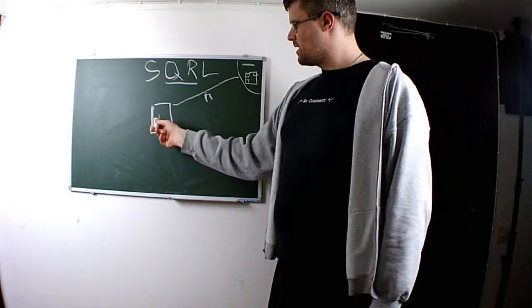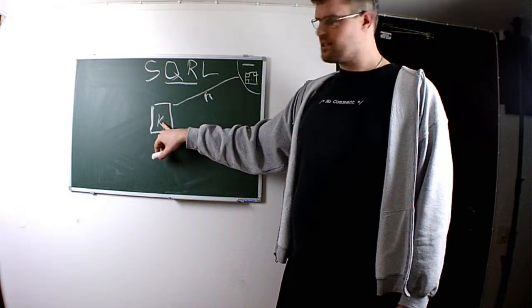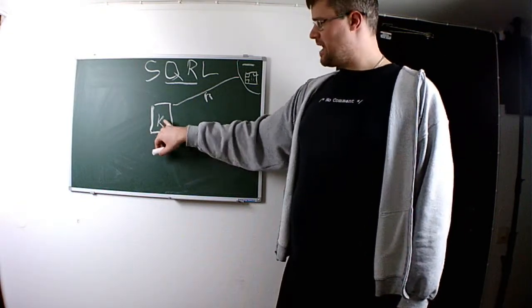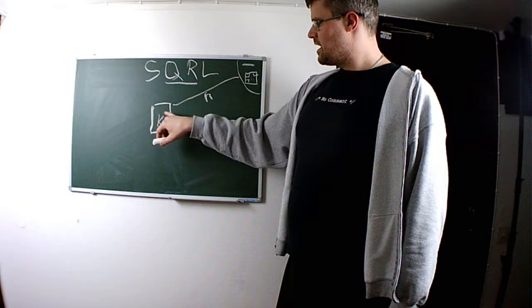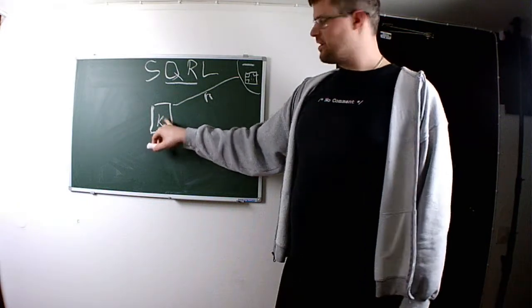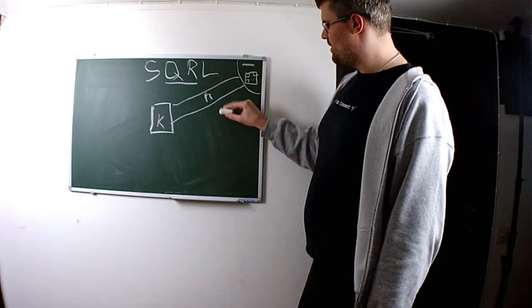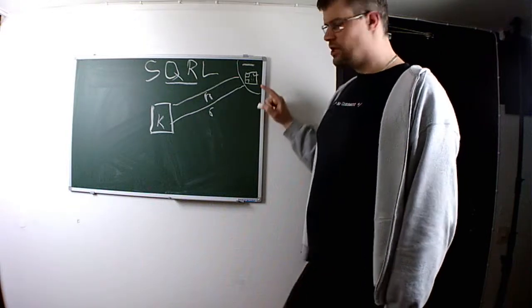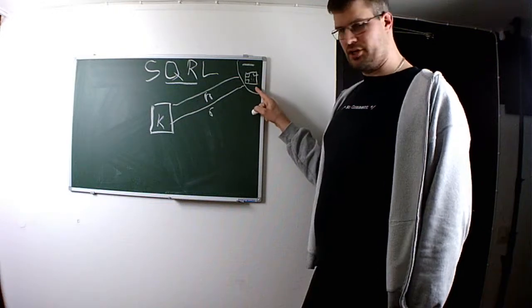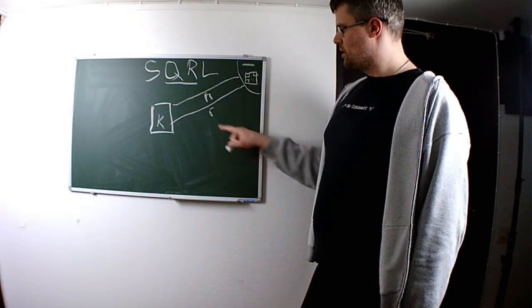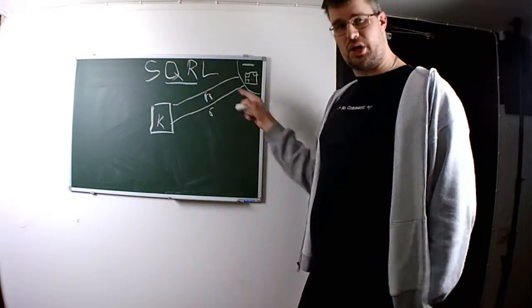Then we use our key that we have stored over here in our secure device. There's a lot of implementation to make this key secure. We take this key and we create a response to the server for this nonce. So we send something back to the server. And this response is unique for our key, unique for the server, and unique for this transmission because we have this nonce that starts the whole process.